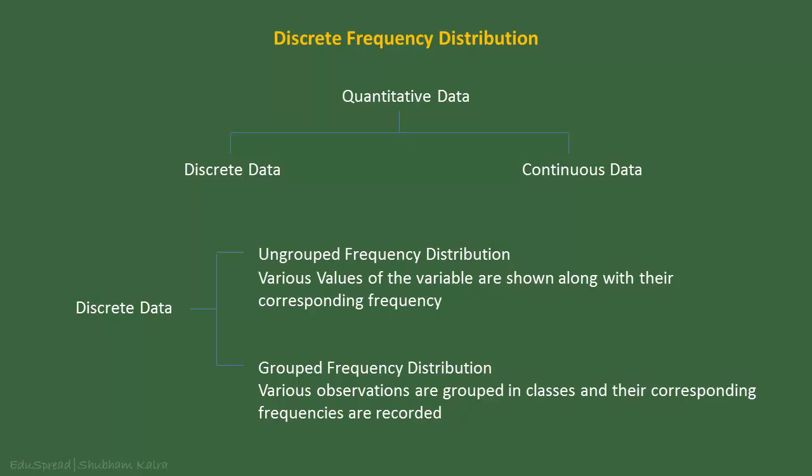In an ungrouped frequency distribution, various values of the variable are shown along with their corresponding frequency. If ungrouped frequency distribution fails to reveal any pattern, then we make another frequency distribution by grouping various observations. This type of distribution is called grouped frequency distribution.